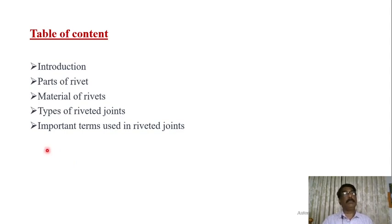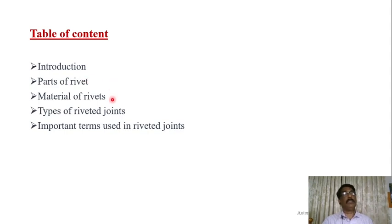The second topic is the parts of the rivet. We will discuss the three important parts of the rivet and the process of riveting, including the different methods of riveting. The next topic is the material of rivets, covering different materials used and their advantages and disadvantages.